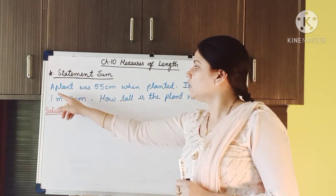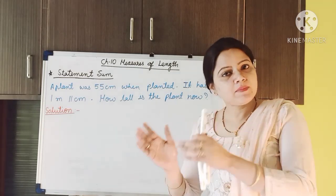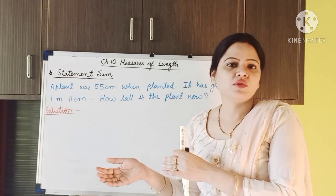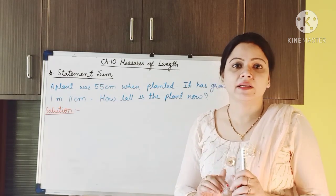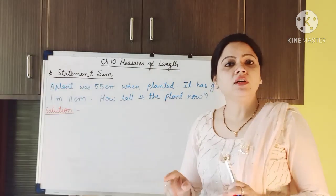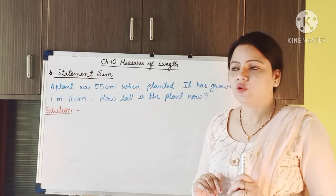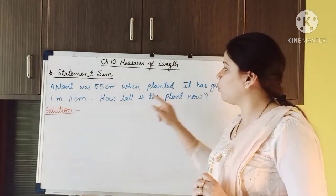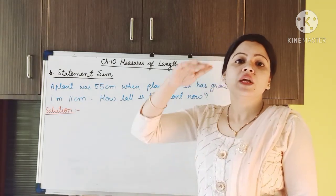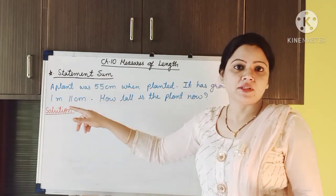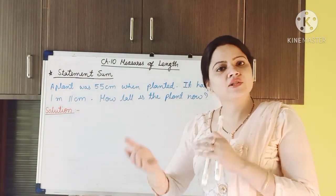I have written here: a plant was 55 centimeter when planted. Means someone has gone to the market and purchased a plant, and now he is planting that plant in his garden. So it was 55 centimeter in length when planted. Now it has grown 1 meter 11 centimeter after planting — that is, 1 meter and 11 centimeter more.